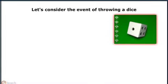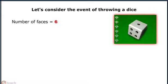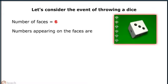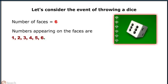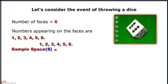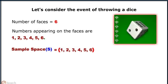Let's consider the event of throwing a dice. The number of faces on the dice is equal to 6. The numbers appearing on the faces are 1, 2, 3, 4, 5, and 6. So the total number of events is equal to the sample space which is denoted by S and it contains {1, 2, 3, 4, 5, 6}.